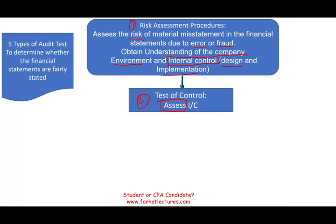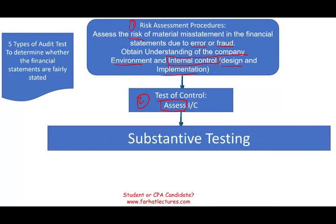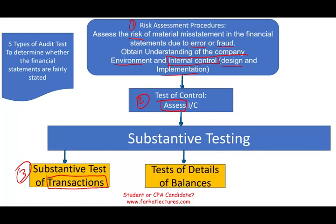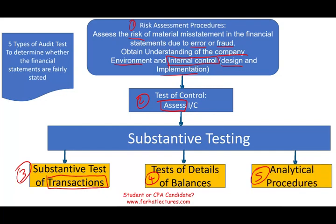After we test internal control, we move to substantive testing. Under substantive testing, you have: substantive test of transactions (that's three), test of details of balances (that's four), and analytical procedures (that's five). Some textbooks keep analytical procedures separate, but I prefer to keep it under substantive testing.